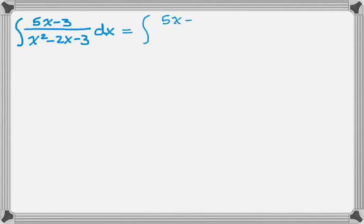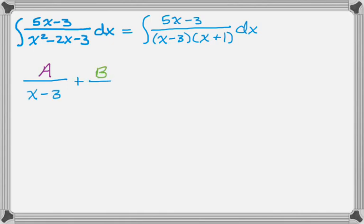What I'm going to do is completely factor the denominator. Now I'm going to decompose that fraction. So what I have is A over x minus 3 plus B over x plus 1. When you add those two fractions together the common denominator is x minus 3 times x plus 1. So it's conceivable that we start with something like this.